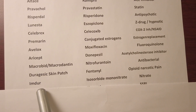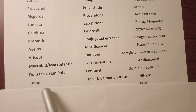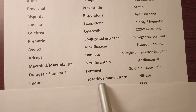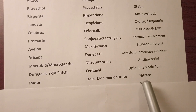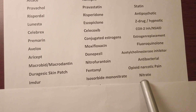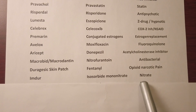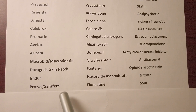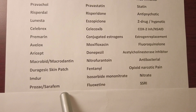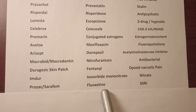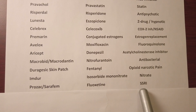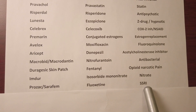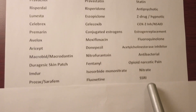We have IMDUR, generic name isosorbide mononitrate, and this is a nitrate. Prozac or Sarafem, generic name fluoxetine, and it's an SSRI antidepressant.